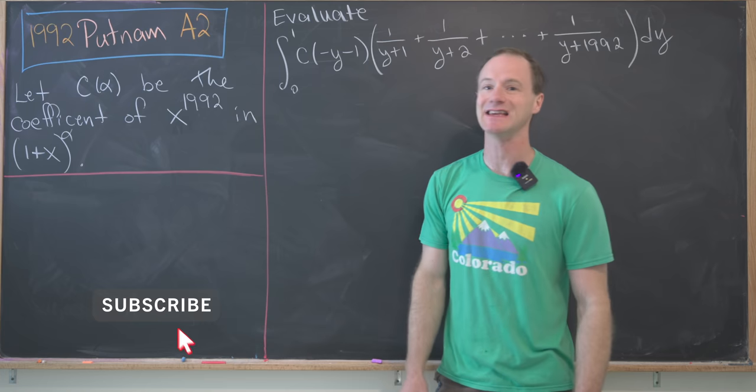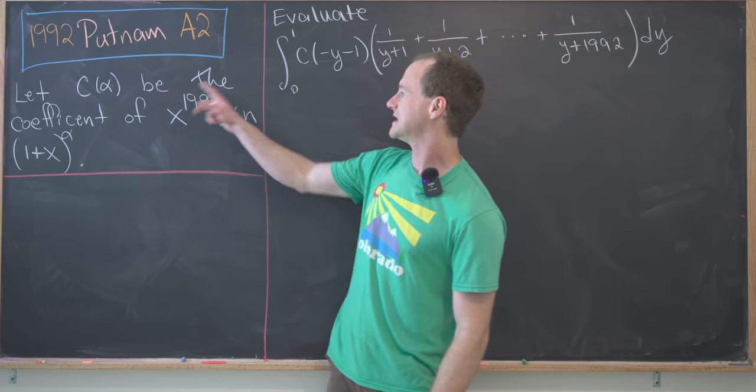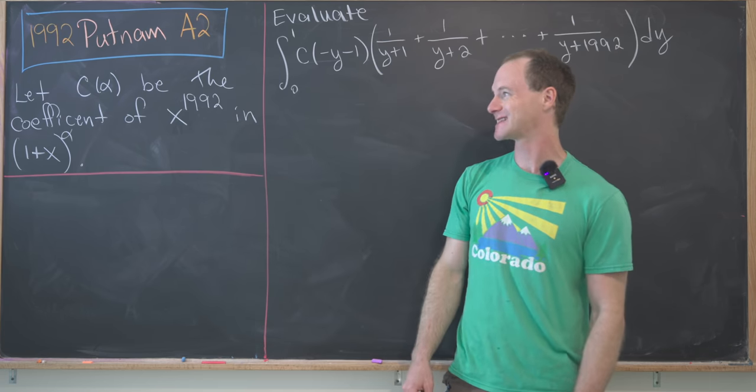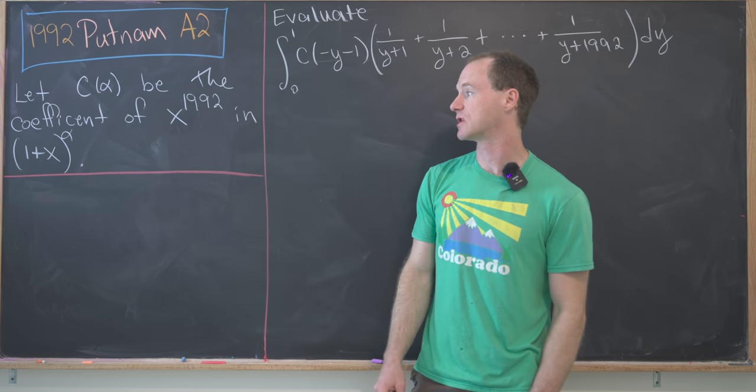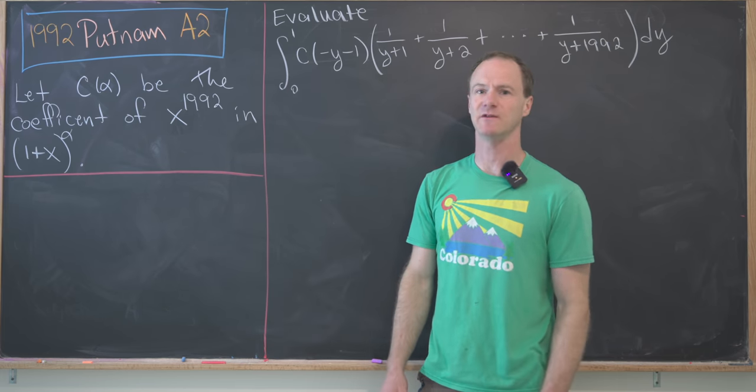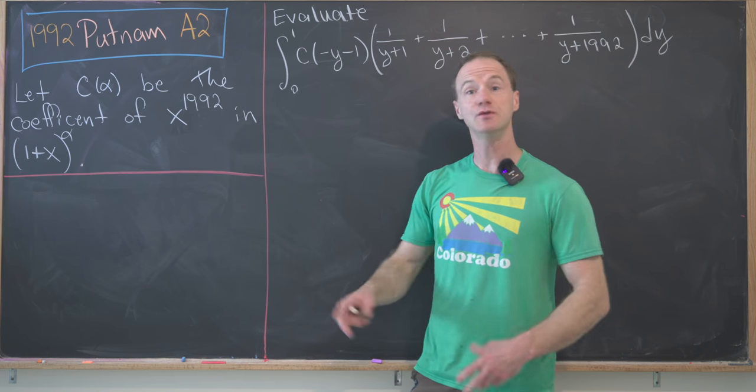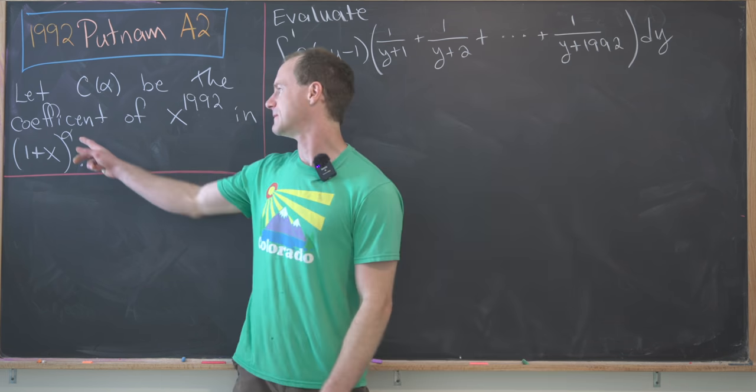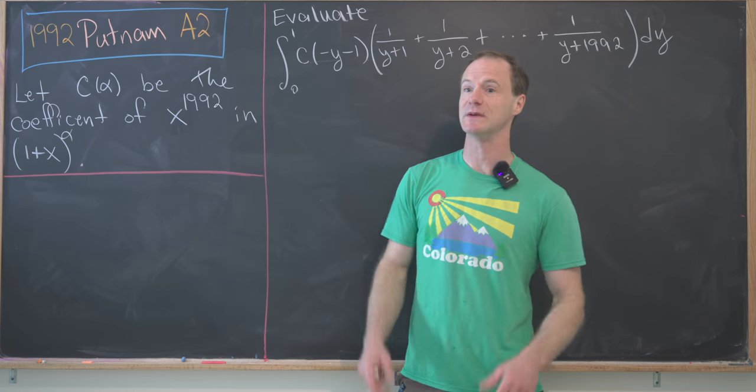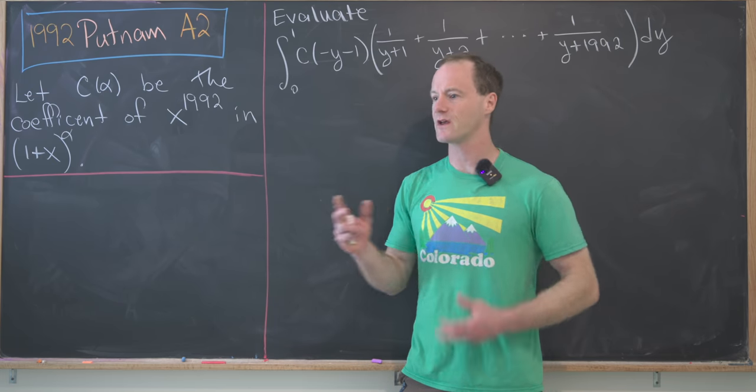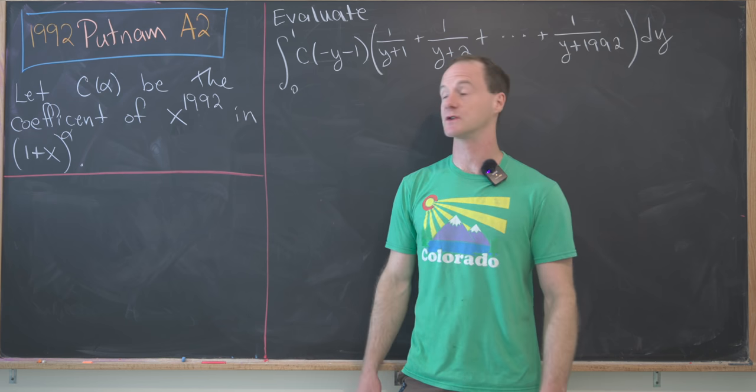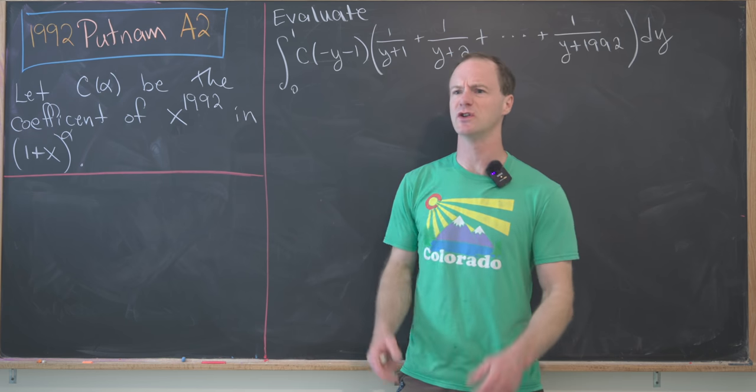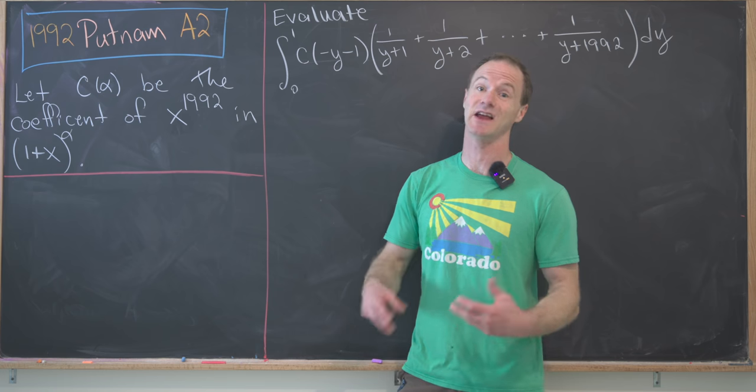We want to define a function c(α) by taking the coefficient of x^1992 from the binomial expansion of (1+x)^α. And notice by Newton's generalization of the binomial theorem, that means we could take α to be any complex number, or if you're feeling more fancy, it could be anything from an associative algebra. But here we'll notice that we're just taking it as a real number.